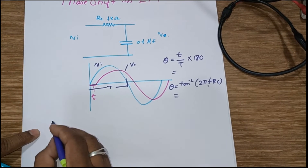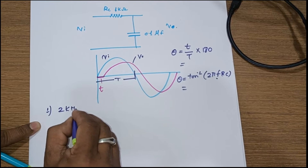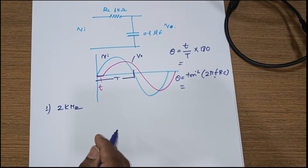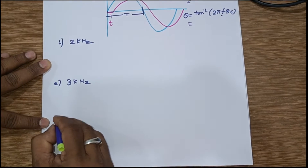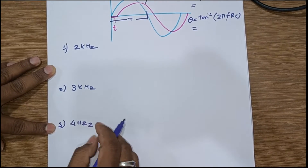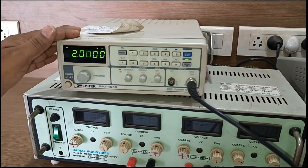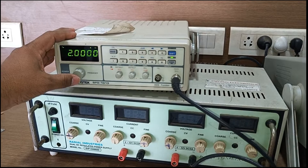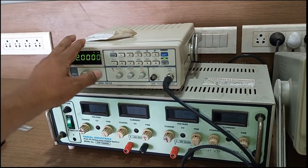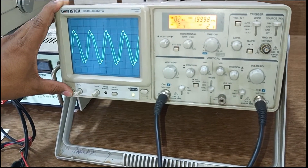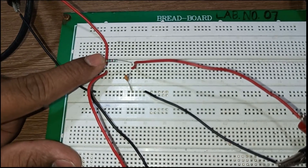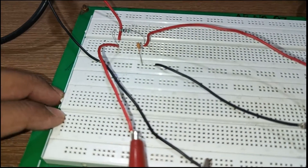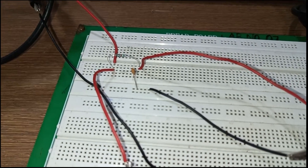We are going to calculate the phase shift for 2 kilohertz, 3 kilohertz, and 4 kilohertz of frequency. For this we require a function generator with 1 megahertz output for sine, square, and triangular waves, a DSO with two channels, and R = 1 kilo-ohm and C = 0.1 microfarad. The design considerations will be given at the end of the video.